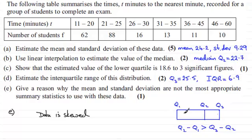You can see that Q2 minus Q1—and I've got the values up here—Q2 was 22.7 and Q1 was 18.6. That width there is greater than Q3 minus Q2: Q3 being 25.5 and Q2, the median, being 22.7.